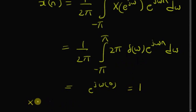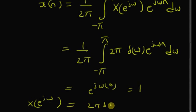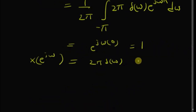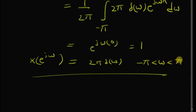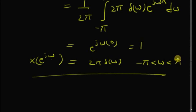Thus, to summarize: the DTFT of the unit impulse signal is one, and the DTFT of the constant one is 2π times δ(ω), that is an impulse in the frequency domain. Thanks for watching.